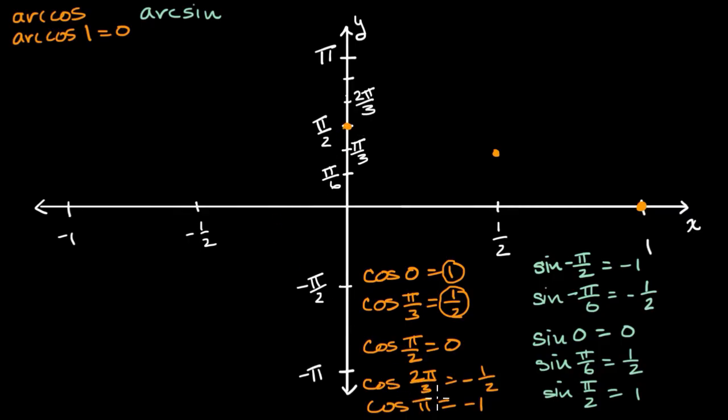Arc cosine of negative one half is going to be two pi over three. Negative one half gets us to two pi over three. And I'm just finding some select points. But then finally, these are some of the easier ones. If I take the arc cosine of negative one, I'm going to get to pi. Arc cosine of negative one is going to be equal to pi.